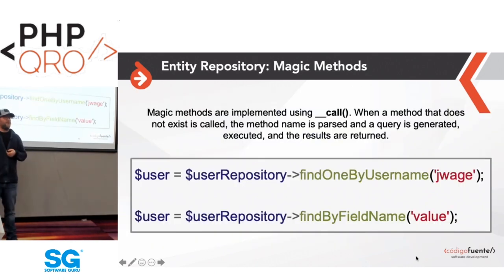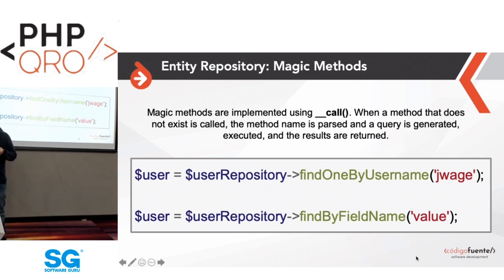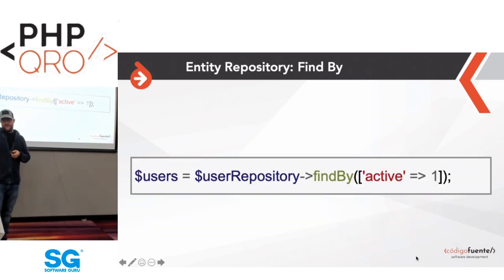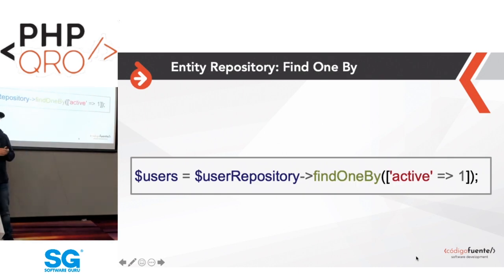There are magic methods available on the entity repository, good for prototyping. For example, findByUsername generates a SELECT query with a WHERE username condition. More explicit methods like findBy(['active' => true]) return all users where the active flag is true, and findOneBy returns a single matching user.